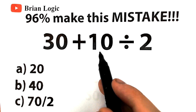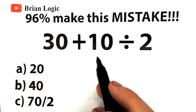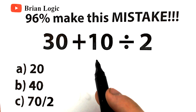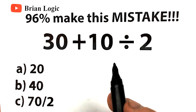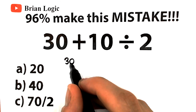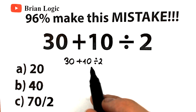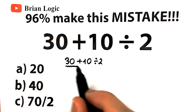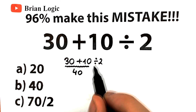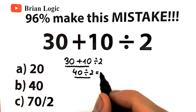I'll show you the correct answer in just one minute, and I'm going to really emphasize an extremely important basic math concept that is going to be the reason why a lot of you are going to do this problem incorrectly. So there are two types of students. The first type solves this question by doing addition first: 30 plus 10 equals 40, and 40 divided by 2 equals 20. Division is their last step, equal to 20.